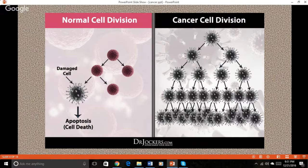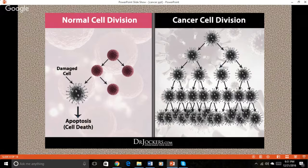Other triggering mechanisms include inhibited ability to repair cell damage, chronic inflammation, chronic exposure to toxic chemicals, chronic acid levels, high levels of iron, and inhibited ability to properly detoxify the body.